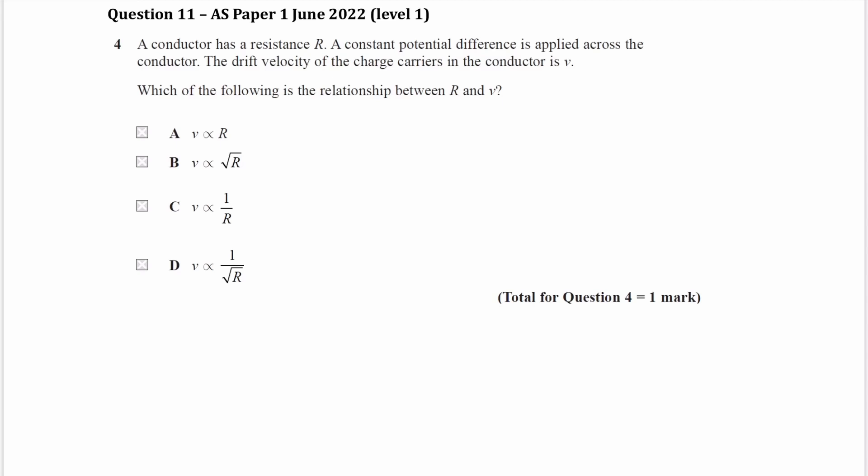A conductor has a resistance of R, and we have a constant potential difference applied across it. So V is constant, and then we know our conductor has a resistance of R. We're told the drift velocity of the charge carriers is V, so we have v.